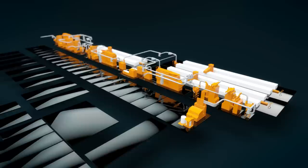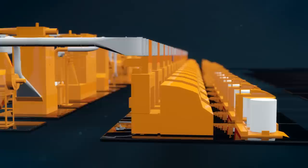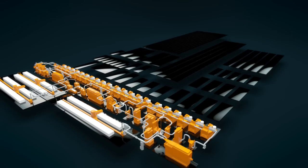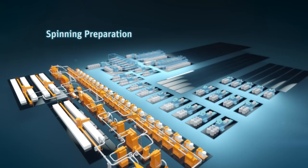In the carding process, the fibers are parallelized and cleaned. A fiber web is formed. This is gathered up to form card sliver and then fed into a can.